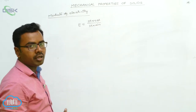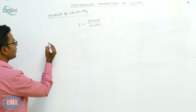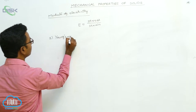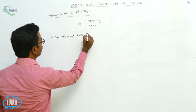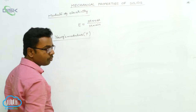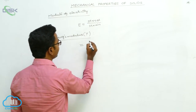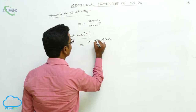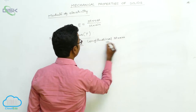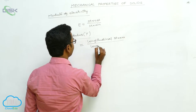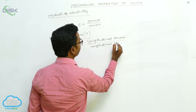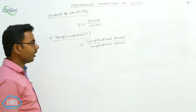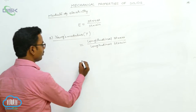The first one is Young's Modulus, and its symbol is capital Y. Young's Modulus is defined as the ratio of longitudinal stress to the longitudinal strain.